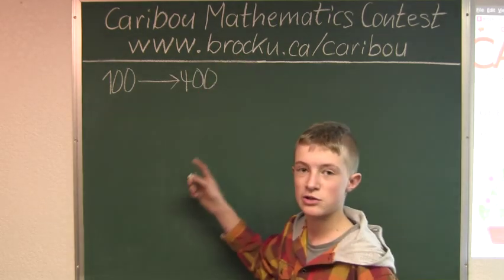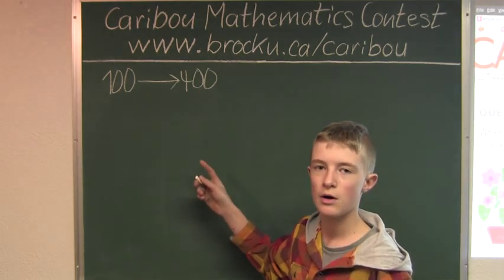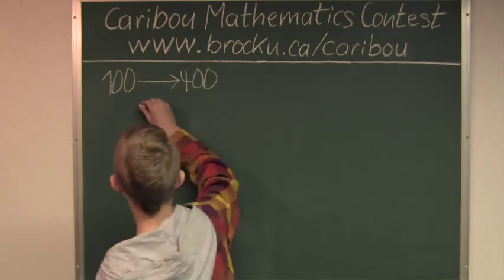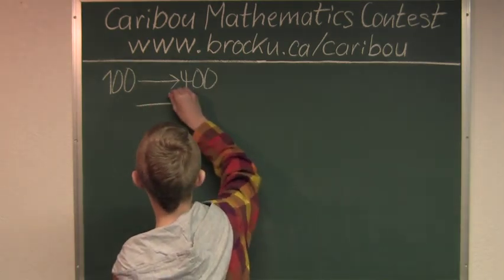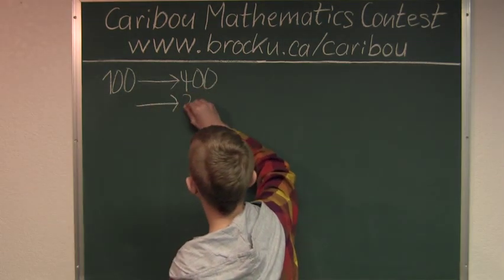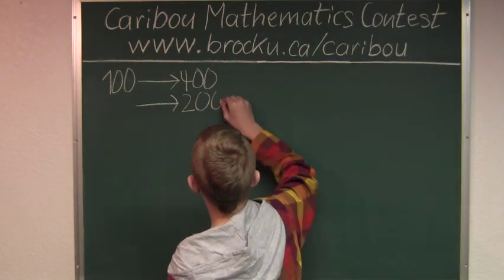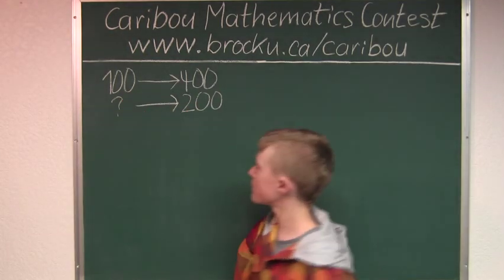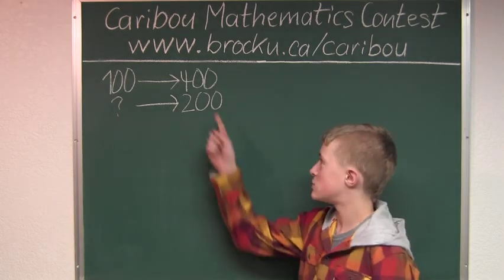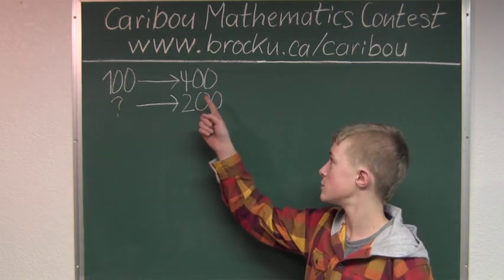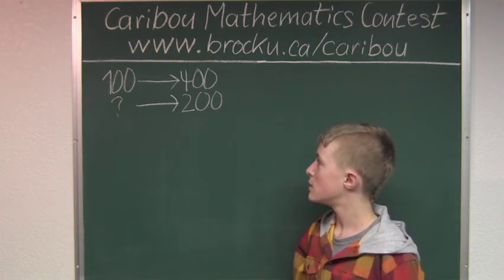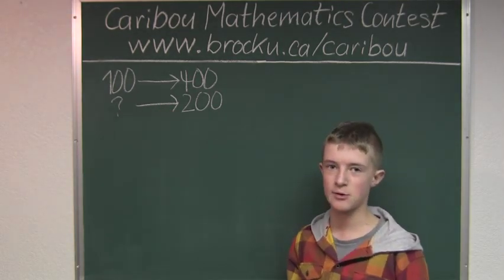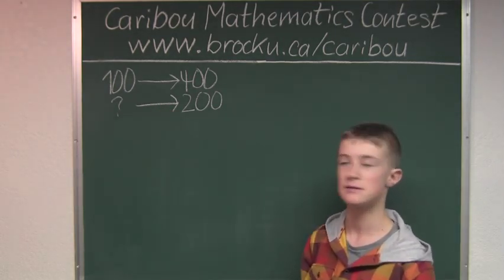But we need 200 flowers, so we need to figure out how many seeds need to be planted. If we know that 200 is half of 400, then we would just do 100 divided by 2, which is 50. So we know that the answer is 50 seeds.